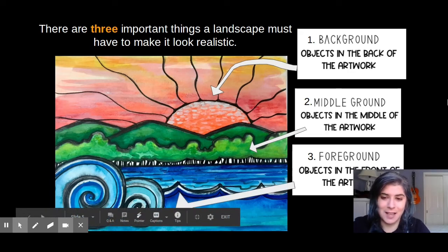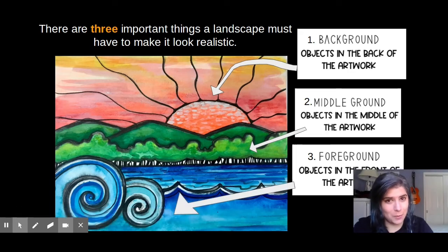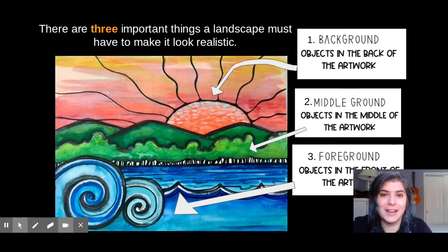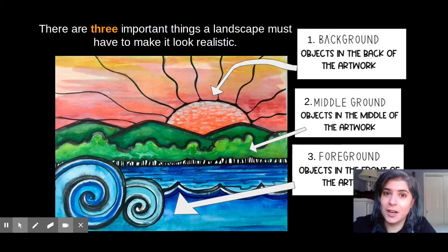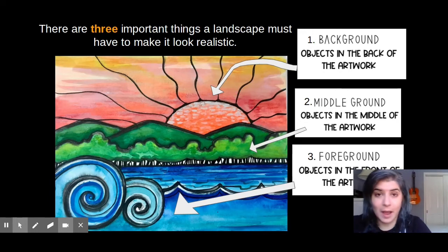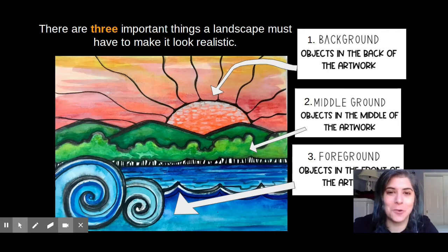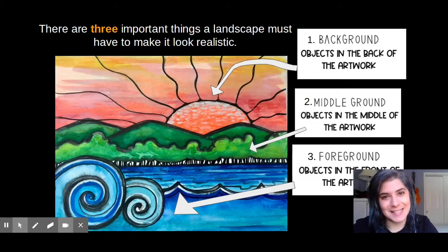In this example, you will see the swirlies of the waves — that would be your foreground. You want to make sure that you have a background, a middle ground, and a foreground in your Robin Mead-inspired artwork. I also want to see that you know the difference between your warm and cool colors by having a warm color sky and cool color land or sea. Let's get started on making our amazing Robin Mead-inspired seascapes.